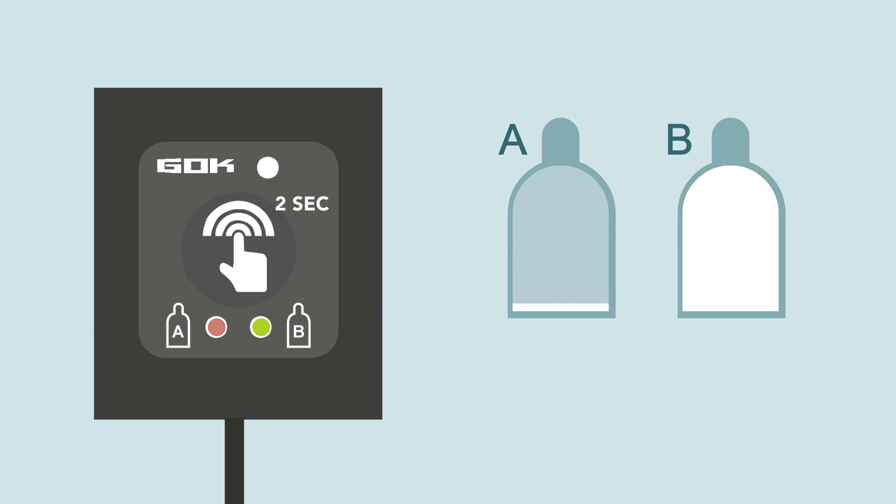Cylinder A is empty and the dual cylinder system has automatically switched to cylinder B. The display now shows a red LED for cylinder A and a green LED for cylinder B.